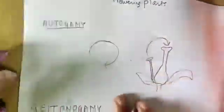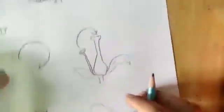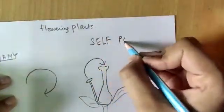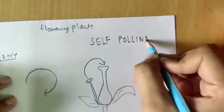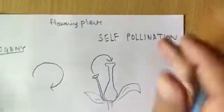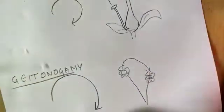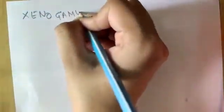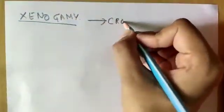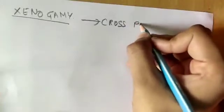Both autogamy and geitonogamy come under self-pollination. The last one is xenogamy, which comes under the category of cross-pollination.